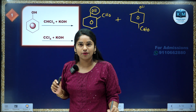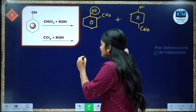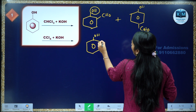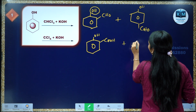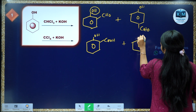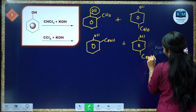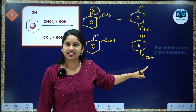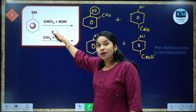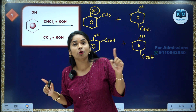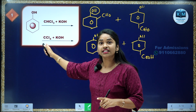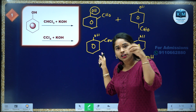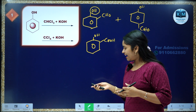But when you take CCl4 and KOH, we will be getting two products: ortho-salicylic acid and para-salicylic acid. So to summarize: the first reaction — phenol with CHCl3/KOH — is the Reimer-Tiemann formylation reaction, where the CHO group is introduced. The second reaction — phenol with CCl4/KOH — is called the Reimer-Tiemann carboxylation reaction, where the COOH group is induced into the molecule.